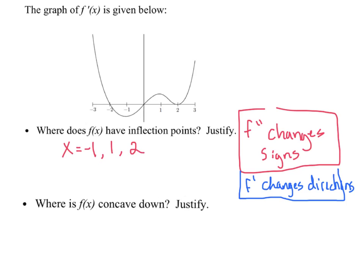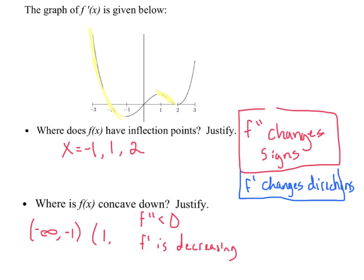Where is f concave down? We could use the second derivative — that's where f double prime is less than zero. But we can also use the first derivative: if f double prime is less than zero, then f prime is decreasing. So we can look for those spots where f prime is decreasing. That gives us from negative infinity to negative one, and from one to two. The College Board usually says, if we give you the derivative, use that to justify your answer.